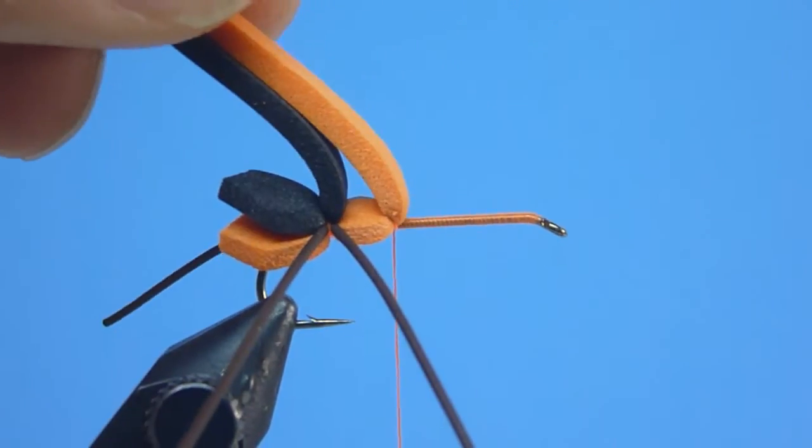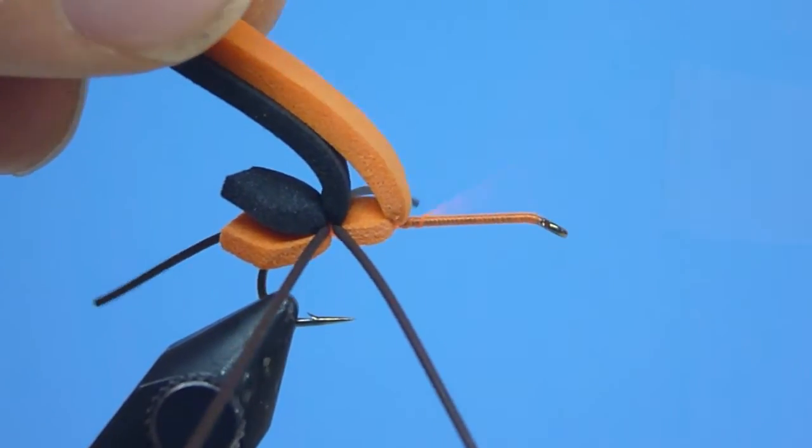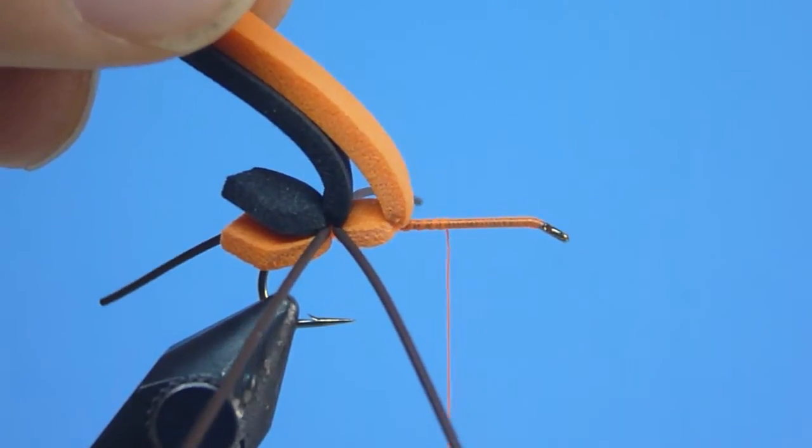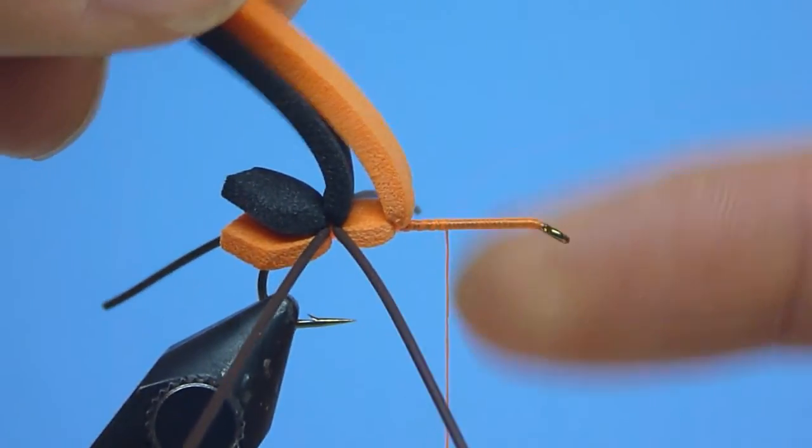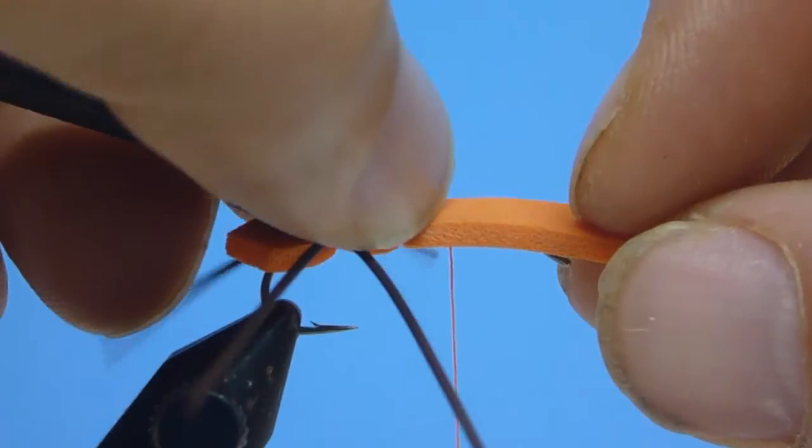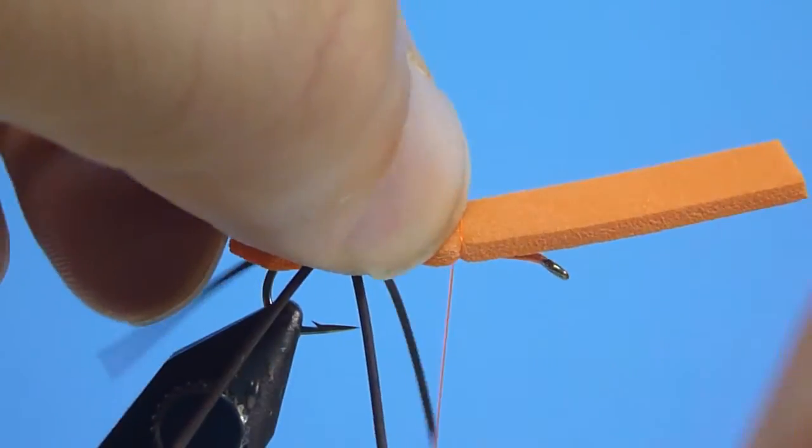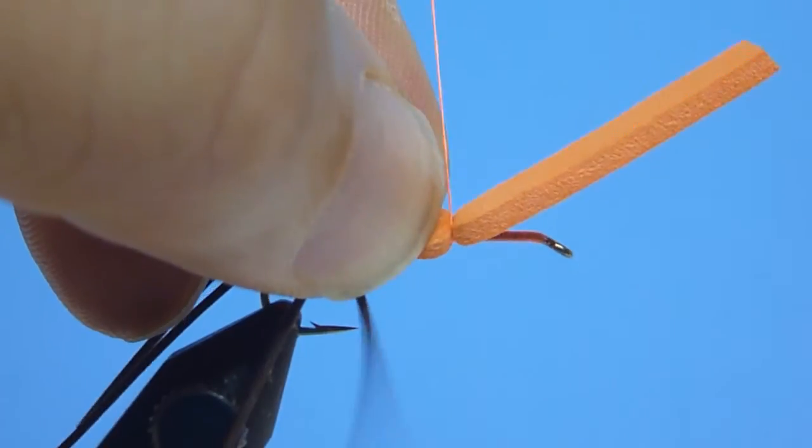To create our second segment, we'll simply repeat, sweeping both strips rearward before advancing our thread along the hook shank about the same distance as wound before, where we'll again release and then bind down only the orange strip, using a few more notably tight-wound turns of thread.